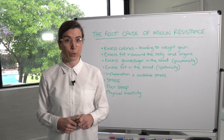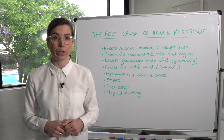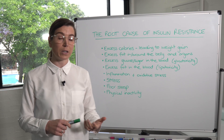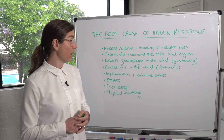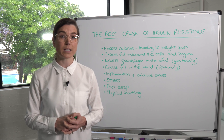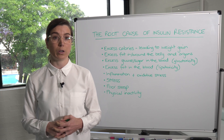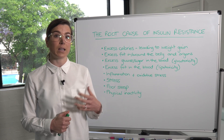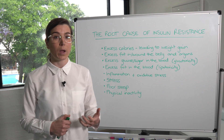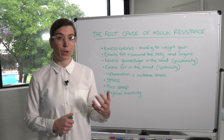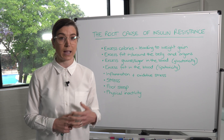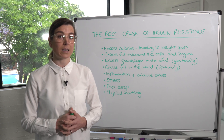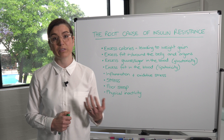Excess glucose or sugar in the blood, also known as glucotoxicity. High blood sugar levels will contribute to beta cell or pancreas burnout, and will cause damage to the pancreas, making the diabetes progress. High blood sugar levels are also inflammatory.